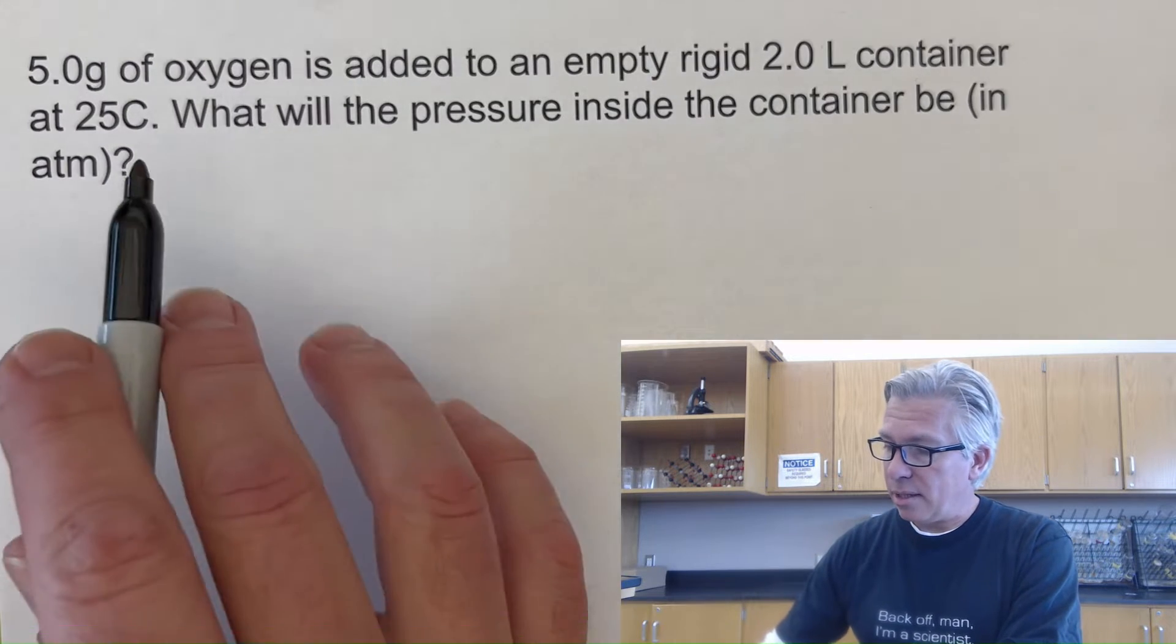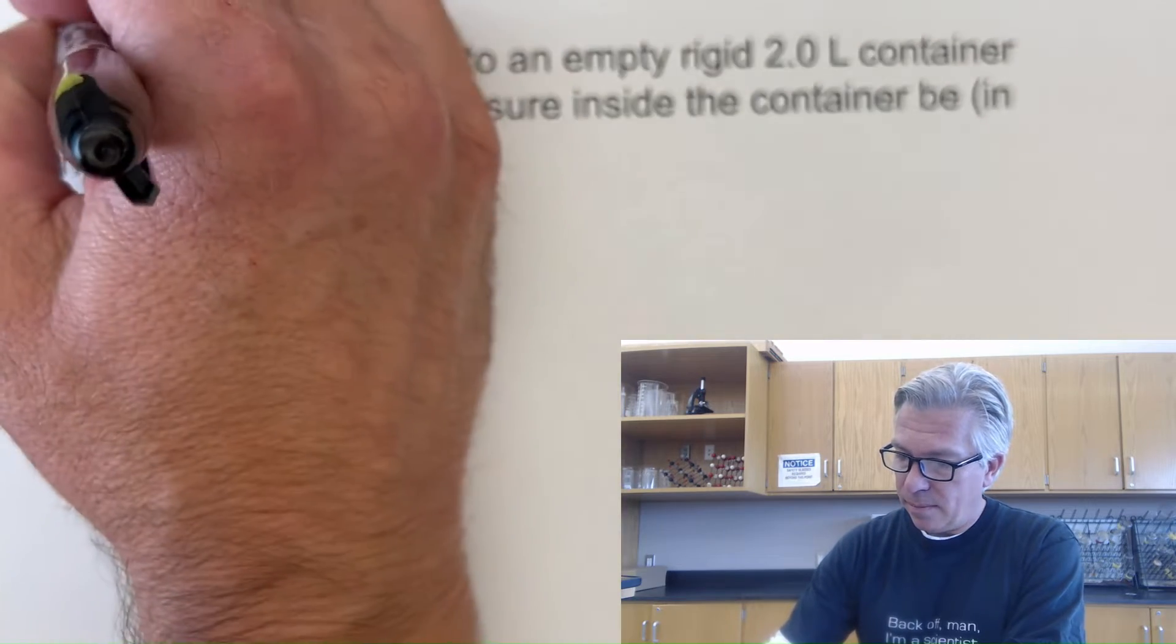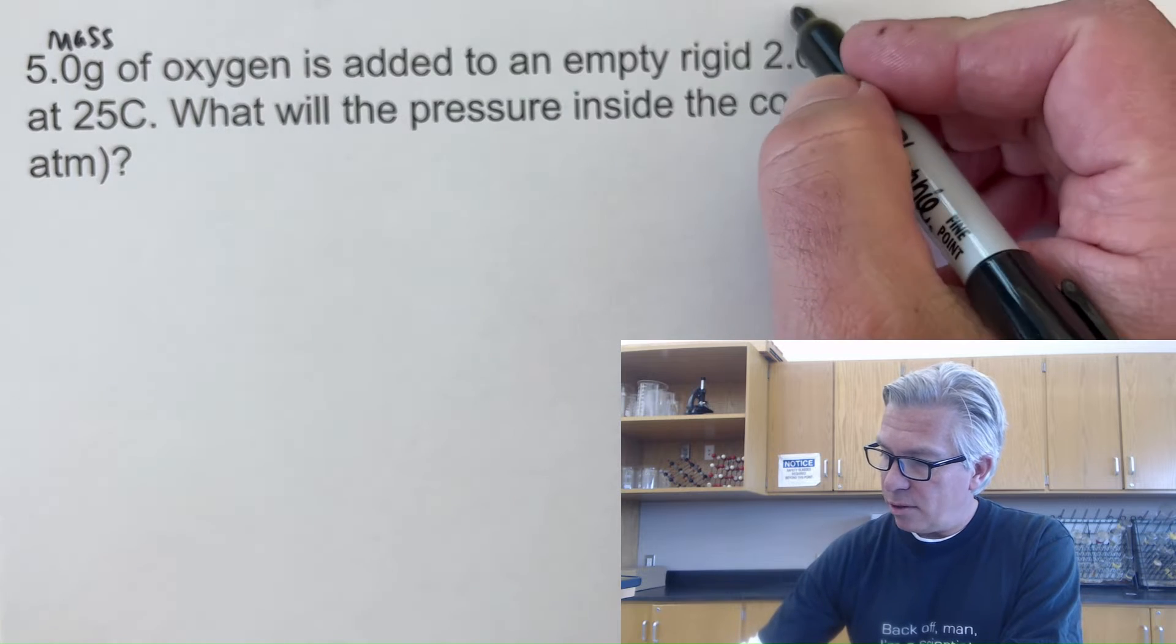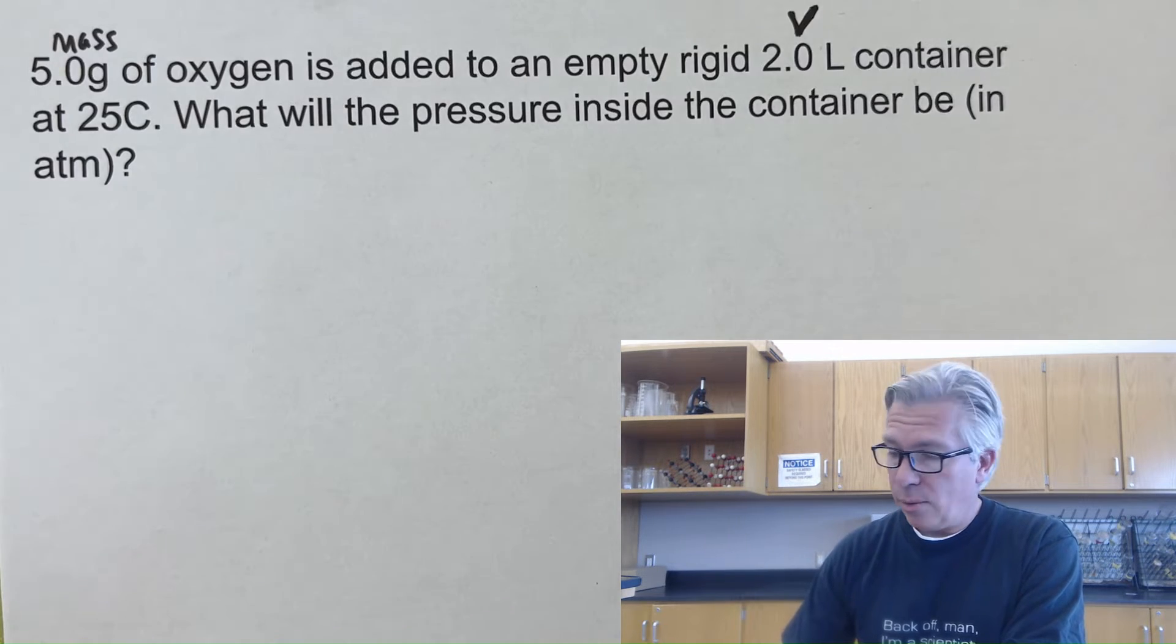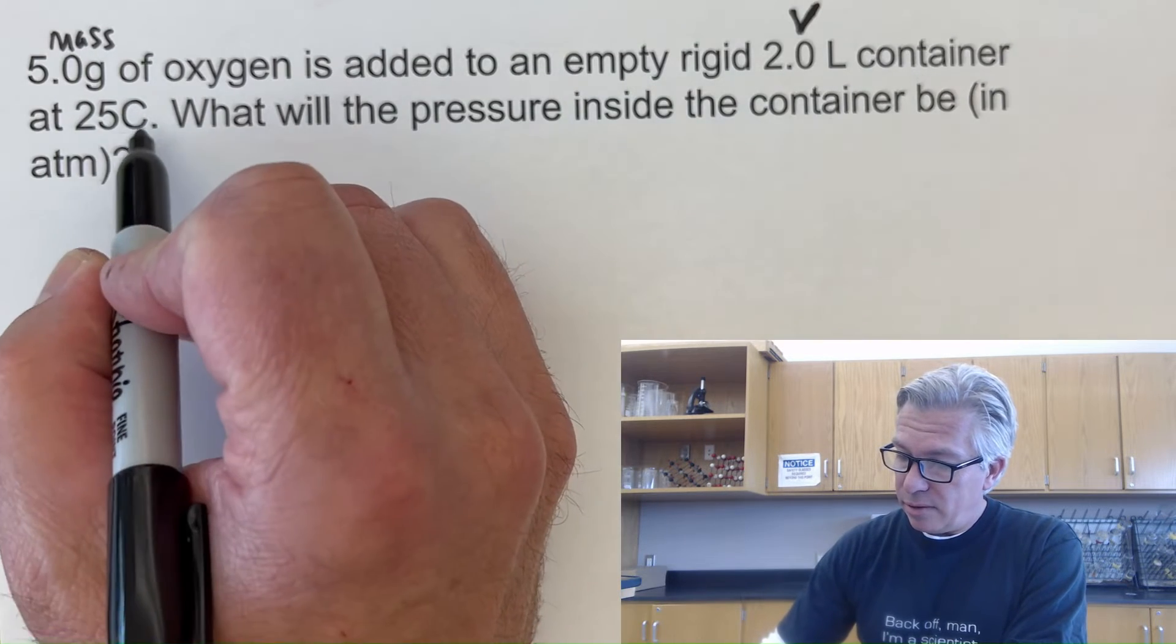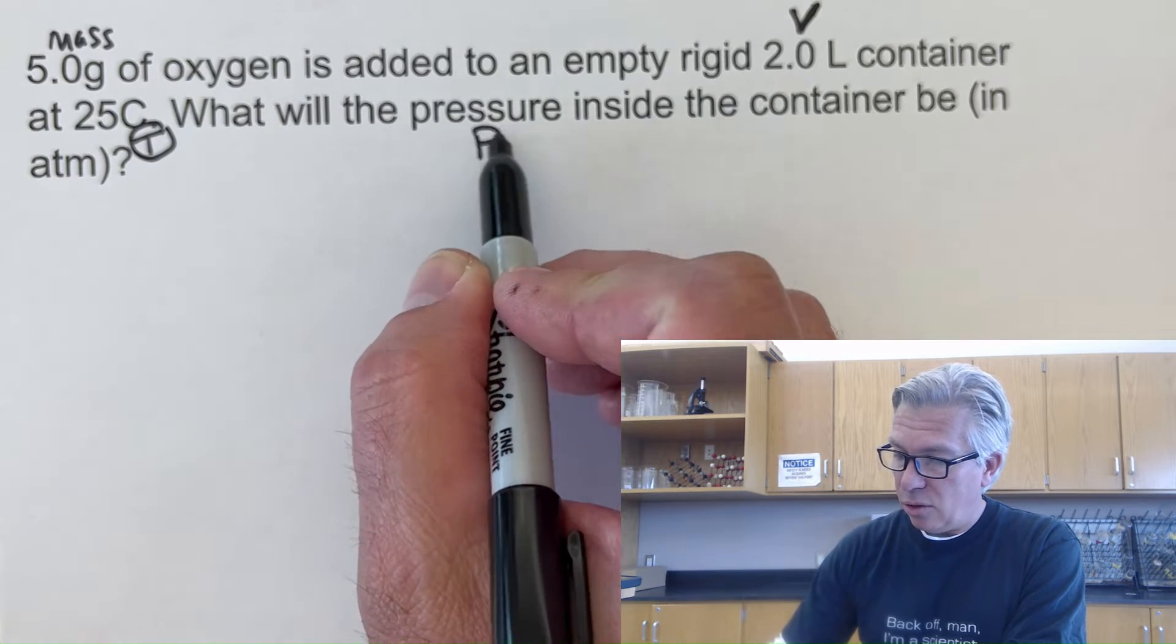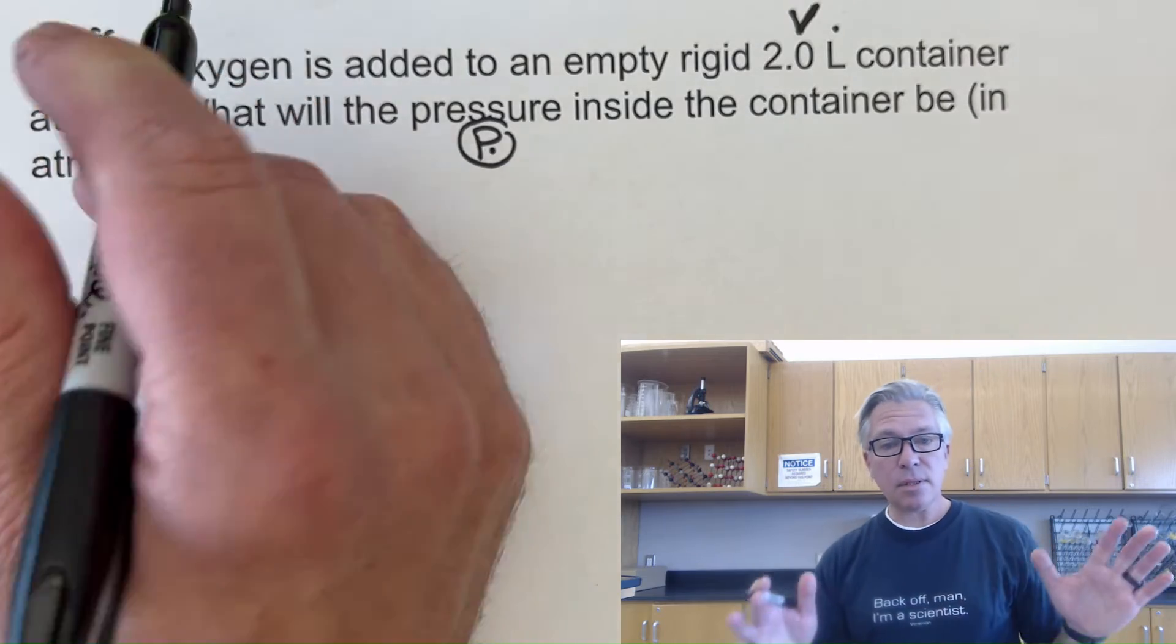Take a look at this: 5 grams of oxygen, so that's a mass, is added to an empty rigid 2 liter container, so that's a volume. Feel free to mark up your worksheet or whatever it is you're working with. It's at 25 degrees Celsius, so that's a temperature, and the question is what's the pressure. So I have a P, a V, a T, and then a mass.